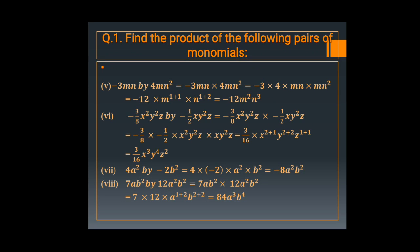In the next question, multiply 7a b square by 12 a square b square. The coefficient is 7 into 12 equals 84. Then for base a, add the powers: 1 plus 2 gives a cube. For base b, add the powers: 2 plus 2 gives b to the power 4. So the product is 84 a cube b raise to the power 4.